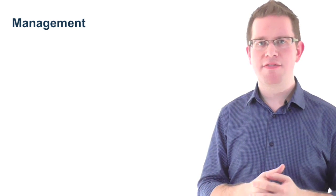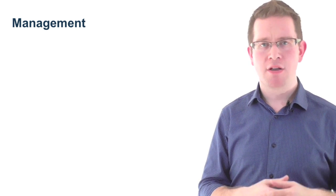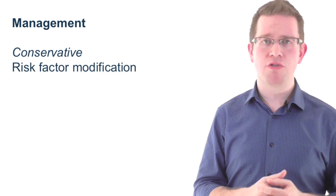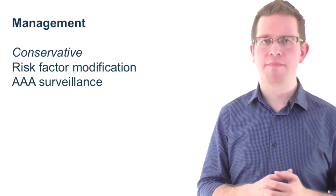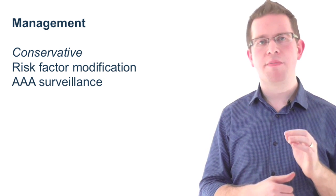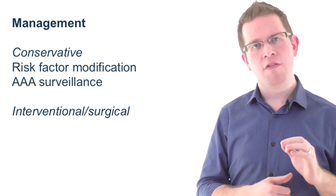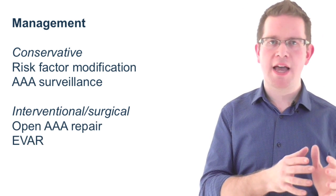In the elective setting, as things stand, there is no drug treatment for AAA. Conservative therapy is limited to controlling vascular risk factors and monitoring the growth of the aneurysm. Once the intervention threshold is breached and a decision made that the patient is fit for intervention, the options are open surgical repair or endovascular aneurysm repair.